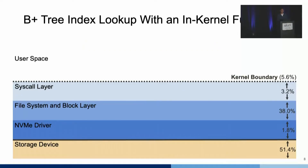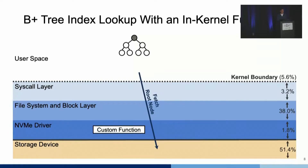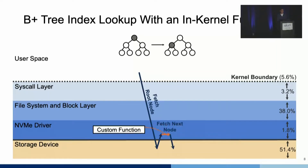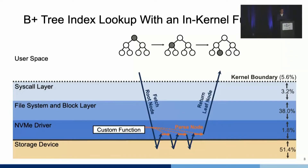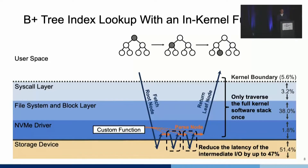Now we show how offloading a custom function into the kernel can help B+ tree index lookup. Assume the application offloads the custom function to the NVMe driver. We still start from the root node and issue the first request, which crosses the kernel boundary and traverses the full submission path. However, when the first read request is completed, instead of returning data all the way back to user space, we call the custom function right at the NVMe driver. The custom function parses the data and submits the next read request directly to the storage device. When the final request completes at the leaf node, the result is returned to user space. We only traverse the full kernel software stack once, reducing the latency of intermediate I/O by up to 47%. We call this a chain of dependent read requests.